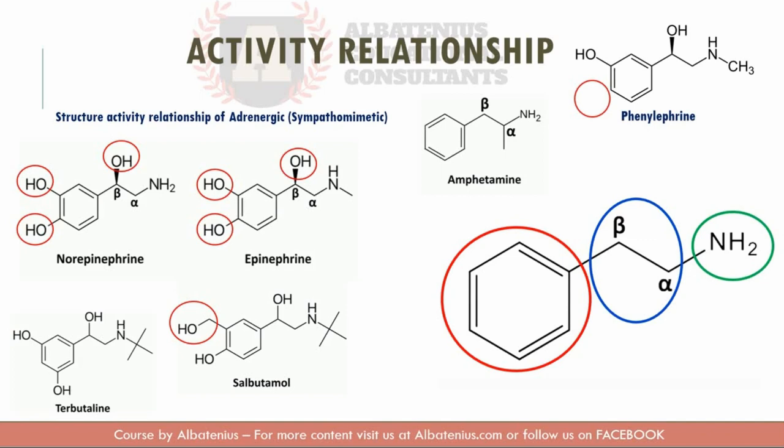When it comes to the beta-hydroxyl group, this produces chirality. For epinephrine, norepinephrine, and related compounds, the more potent enantiomer has the R configuration, as shown in the slide.